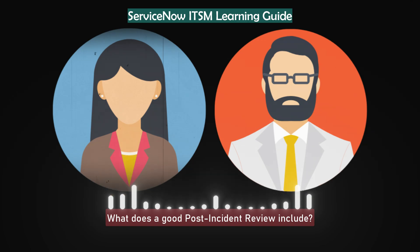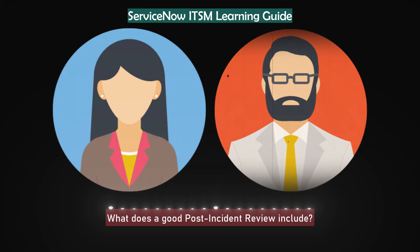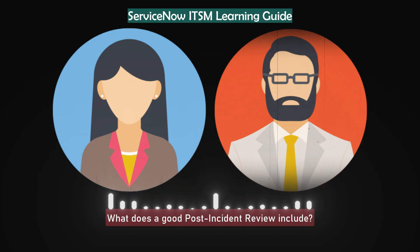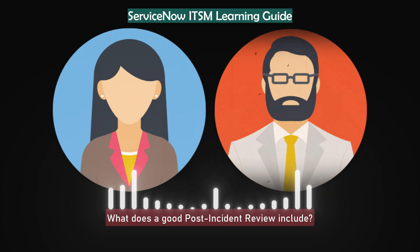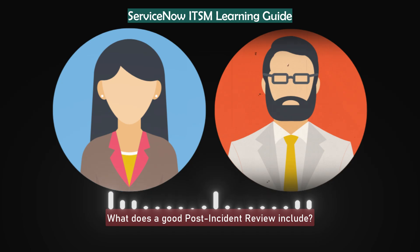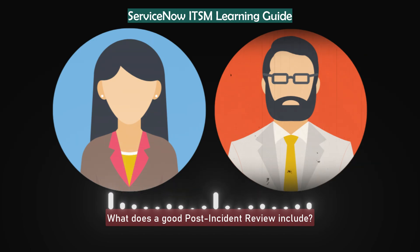What does a good post-incident review include? A strong PIR tells the story clearly — what failed, why it failed, and how we can prevent it next time. I include a timeline, key decisions, and measurable business impact. We discuss both technical and process gaps, then assign actions with owners and dates. It is not about blame — it is about learning. I always make sure actions from the PIR are tracked and closed, not forgotten.